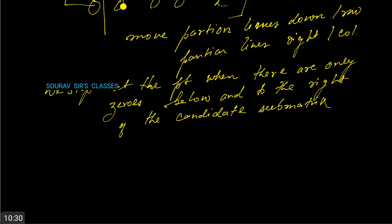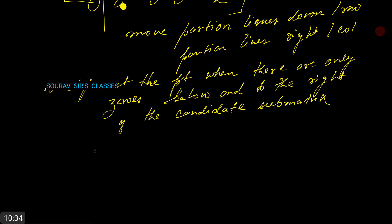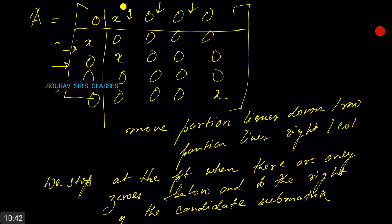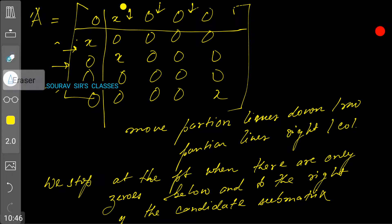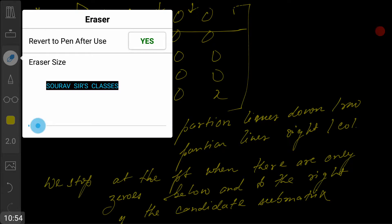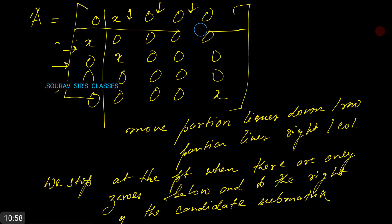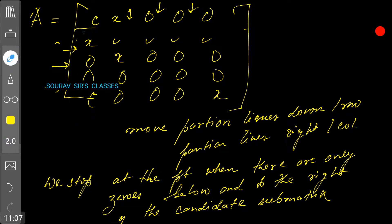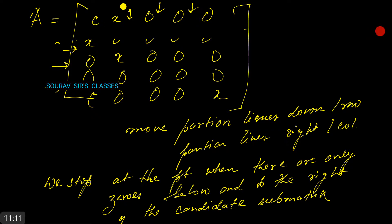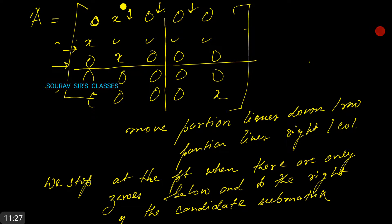Our first submatrix A_1 shall be a 3×3 matrix in the upper left corner. This is 3 rows and 3 columns. This is how we consider our A_1 — it is the 3×3 matrix in the upper left corner.